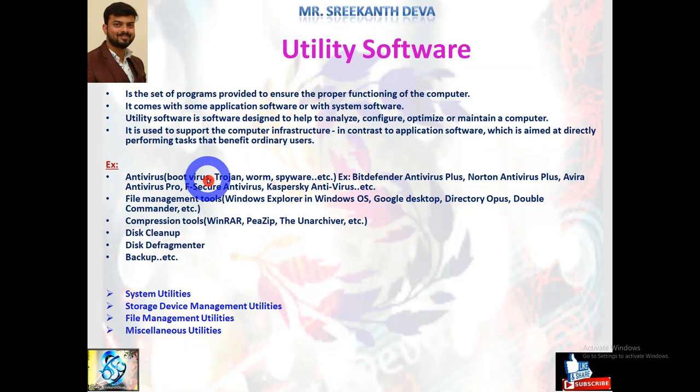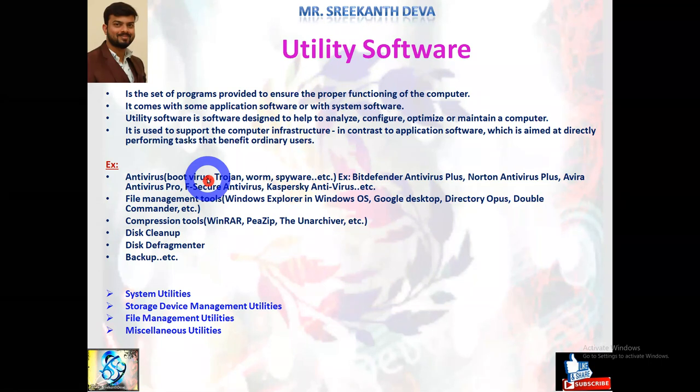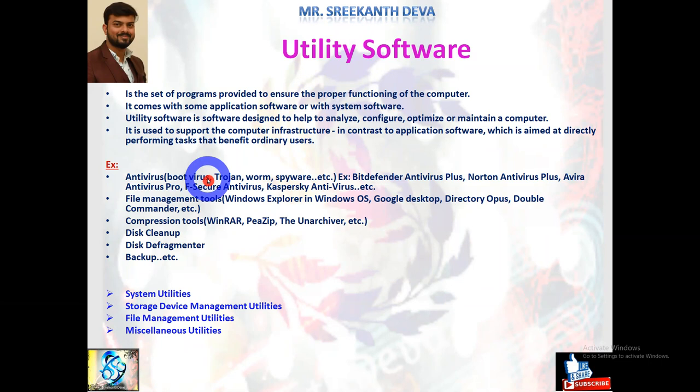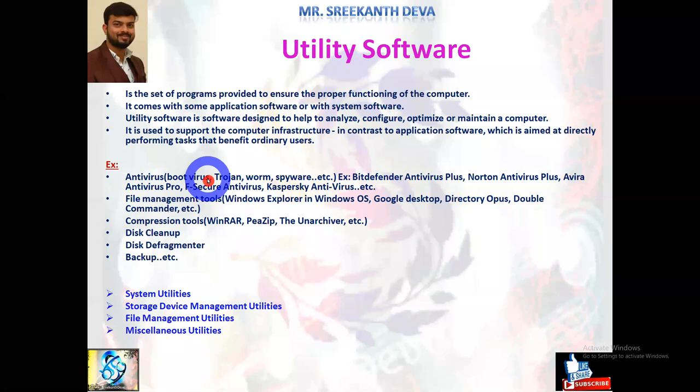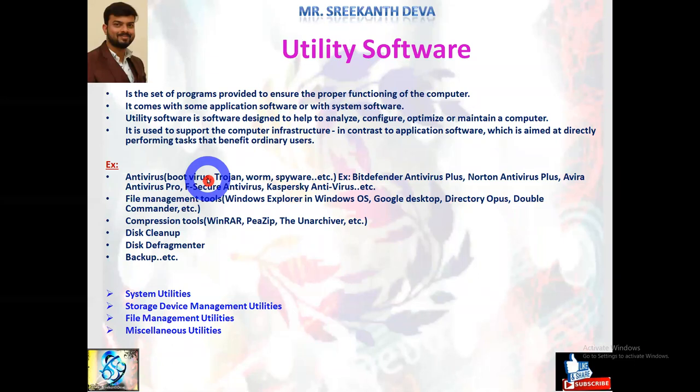Direct action viruses: the main purpose of these viruses is to replicate and take action when executed. When a specific condition is met, the virus goes into action and infects files in the directory or folder specified in the autoexec.bat file. This batch file is always located in the root directory of the hard disk and carries out certain operations when the computer is booted. These types of viruses are called direct action viruses.